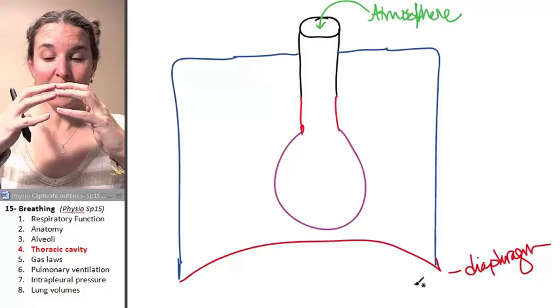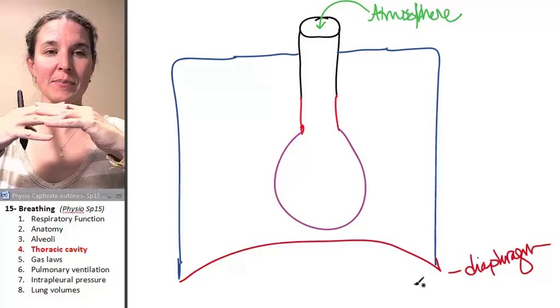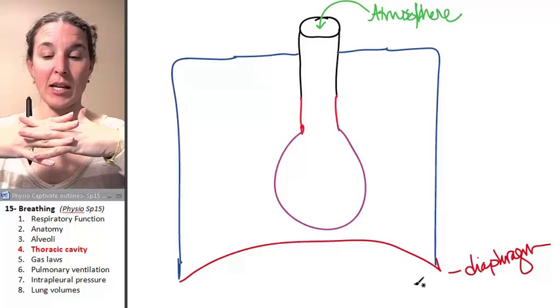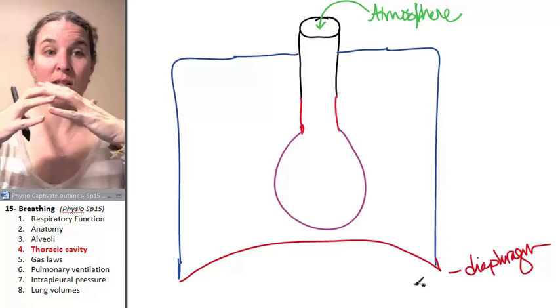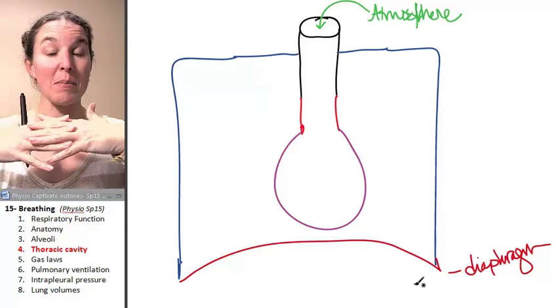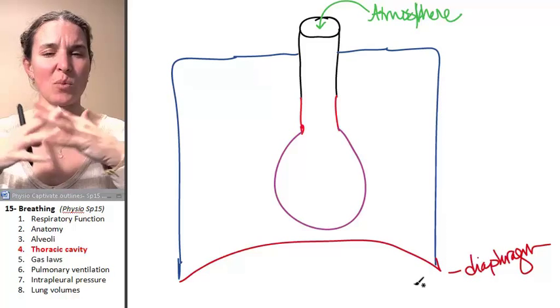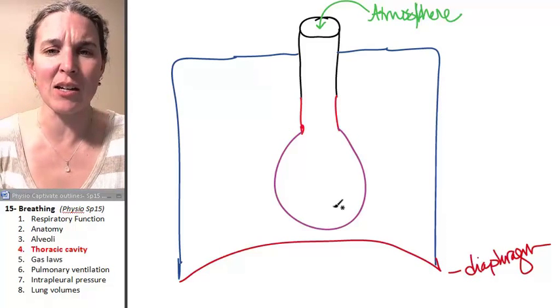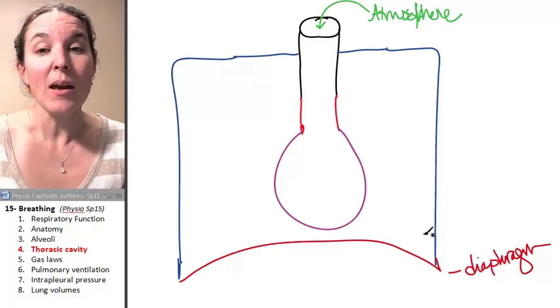It is skeletal muscle. When it contracts, does this kind of movement. Can you see how I'm shortening my fingers? But the shape of it means that when the diaphragm contracts, we get some interesting stuff happening here in the thoracic cavity.